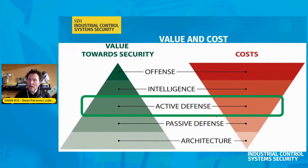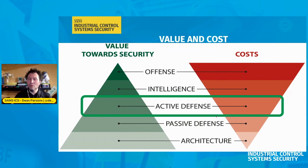If we take a look at the value versus the cost — how much you're going to spend and how many resources you'll need for each phase — on the left we see the value toward security. At the bottom we see architecture, which really doesn't cost a whole lot. It's extremely affordable to make sure architecture is done correctly. Beyond that you build on top of architecture with passive defense, which costs a little bit more but still gives you a lot of return on investment.